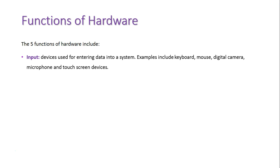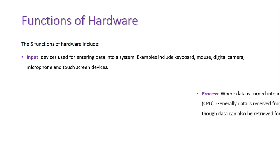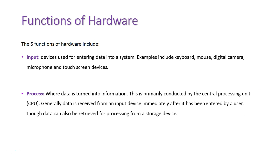With an input device, we are basically beginning by entering data into a system. Next is the process, and this is basically the main part of a system — it's where data is turned into information. It's primarily conducted by the central processing unit, and generally this is what happens to data after we've inputted it into the system.